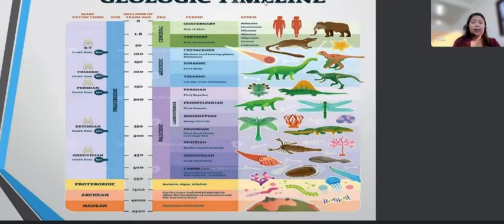This is an example of a geologic time scale. So here, for example, we have the Cenozoic era. So under the Cenozoic era, we have the period quaternary and tertiary. So that simply means that during the Cenozoic era, under quaternary period, there is the rise of the man. So that is the time wherein man, according to geologic time scale, exists.